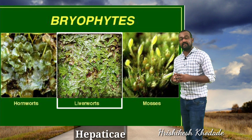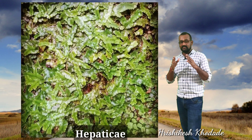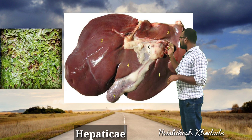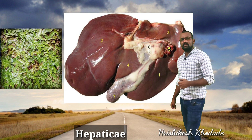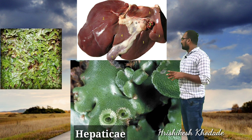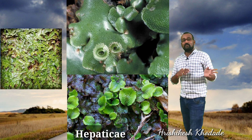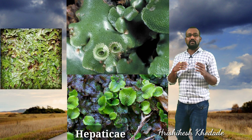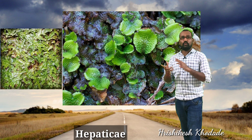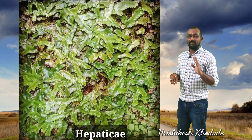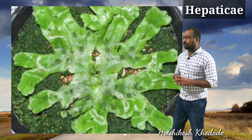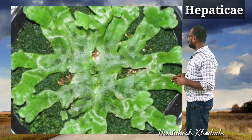Let's begin with the first class of bryophytes: liverworts or Hepaticae. The name comes from the fact that they look like the human liver. As shown in the picture, their structure is analogous to the human liver, and interestingly many human liver diseases can be cured with the help of these bryophytes belonging to the Hepaticae. That is why they are named Hepaticae and liverworts simultaneously — alternative names for this class of bryophytes.